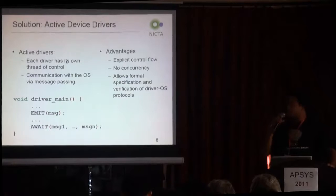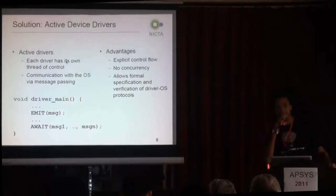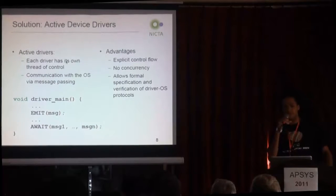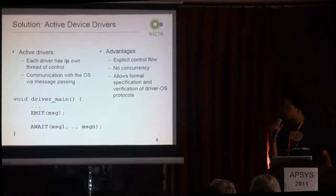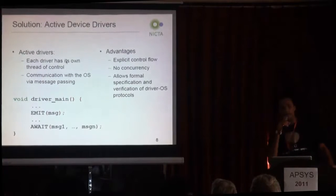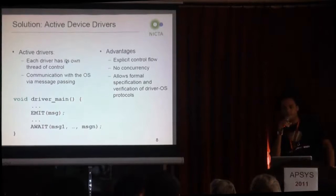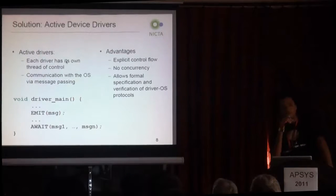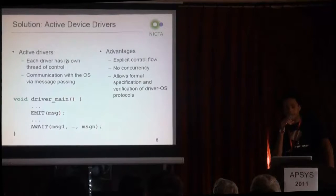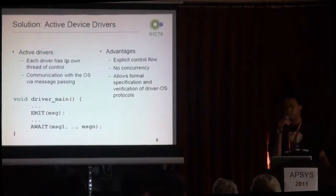There are three advantages. The first one is that the control flow is explicit, which means there is one entry point, and the source code explicitly shows whether the driver is prepared to handle a request or not. Second, no more concurrency. And third, this architecture allows us to formally specify the interaction between the driver and the operating system using a protocol state machine, and we can automatically verify that the driver complies with the state machine.